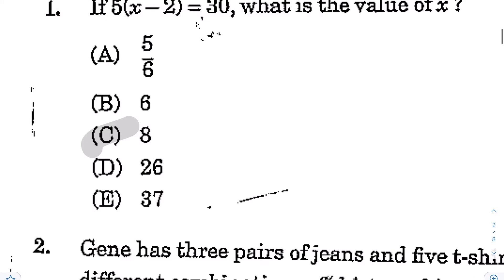Alright, for question number one, if 5 times (x minus 2) is equal to 30, what is the value of x? So here we have one equation and one variable, which means you can solve for x. What you want to do is use inverse operations, and what you do to one side, you've got to do to the other side to get x by itself.